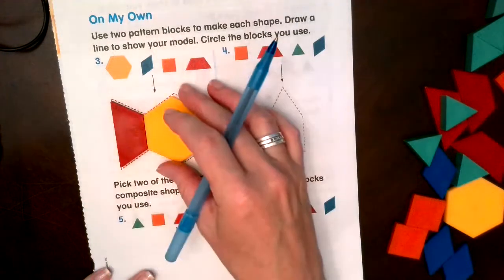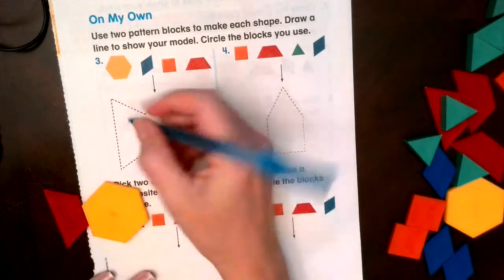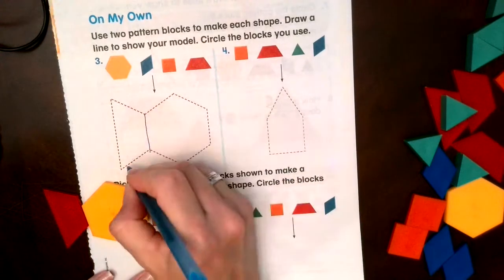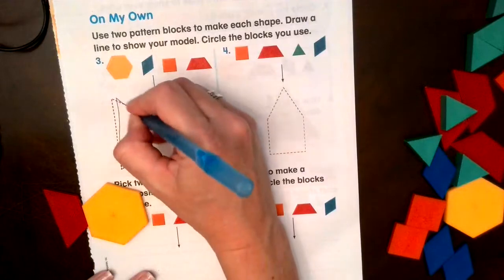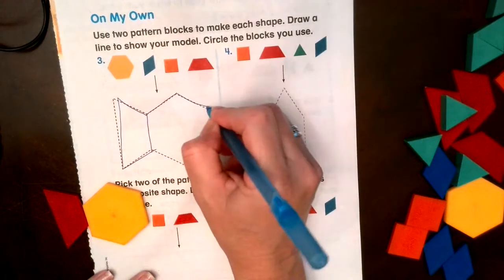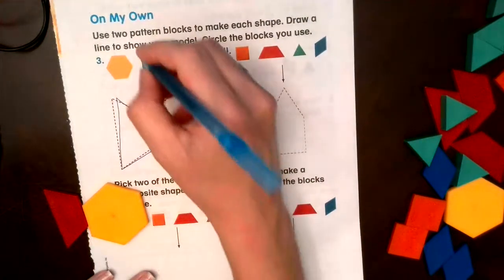All right, so I'm gonna draw our line here to show that we have a trapezoid and a hexagon, and we'll circle our shapes we used.